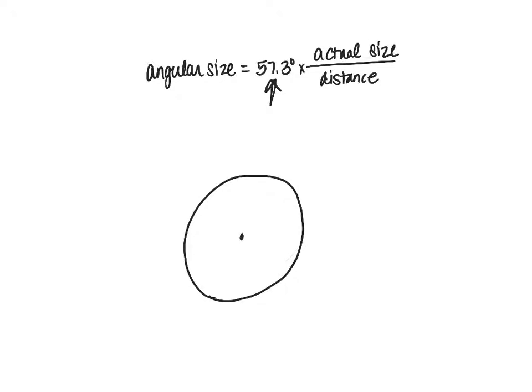When we're looking at something that has a particular size in the sky, this right here is the angle that it covers, and so this is the angular size. Now this distance would be the actual size because this would be the object we're looking at, and then this would represent the distance.